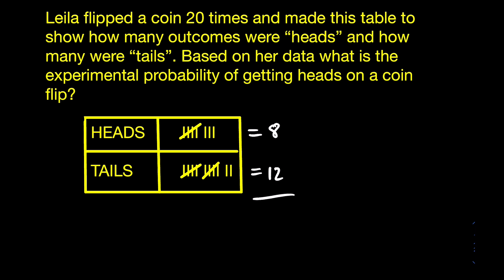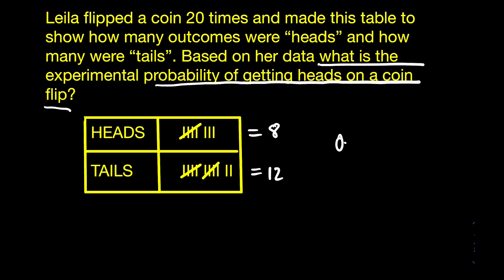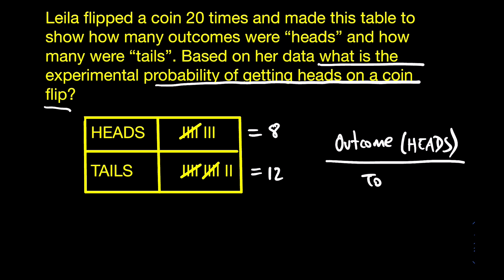If we look back at the question, it says: based on her data, what is the experimental probability of getting heads on a coin flip? So here what you would do is set up a fraction to look at the desired outcome — which they're telling us is heads — and then divide that number by the total number of coin flips.